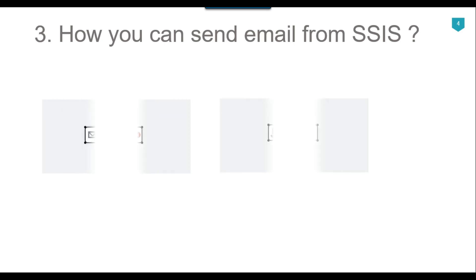Our third question is: how can you send email from an SSIS package? There are two options: you can send email using the Send Mail Task or using the Script Task. With the Send Mail Task, you use your company's SMTP server — you provide the SMTP server in the SMTP Connection Manager and configure the rest easily, including from address, to address, subject, and message body.